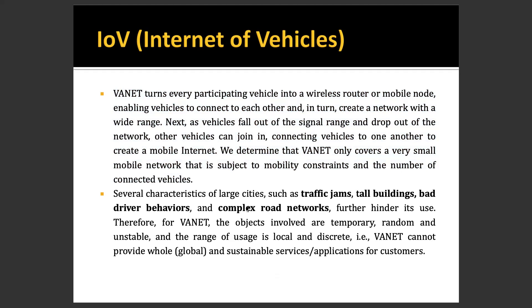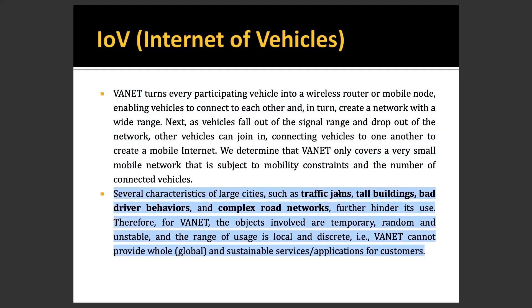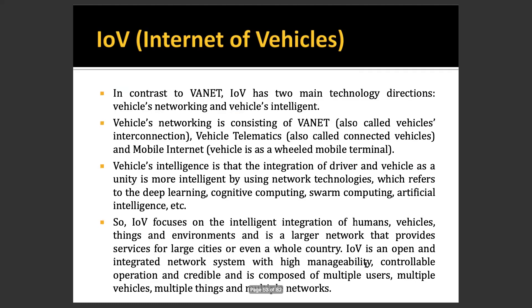V-Net fulfills requirements within a very small area — only within the communication range of the vehicle. If we require global connectivity, we need a technology like IoV. Several characteristics of large cities — such as traffic jams, tall buildings, bad driver behavior, and complex road networks — further hinder its use. Therefore in V-Net, the objects involved are temporary, random, and unstable, and it cannot provide whole or global sustainable service applications for customers.